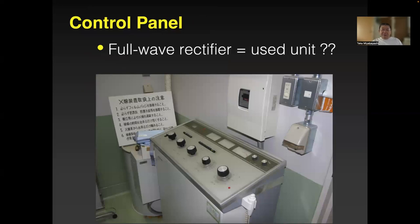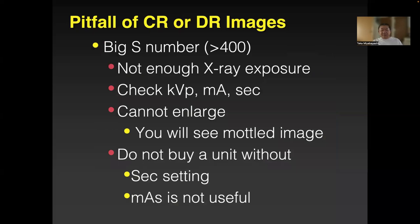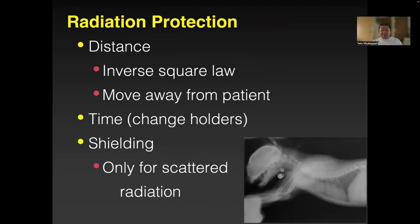A rectifier — you can still use it, it lasts 30 to 40 years. But the old units from the university may be too old. A DR system looks great. The problem is if you don't have enough X-ray exposure the image will be grainy. I'd buy a DR unit — then you don't even need a grid, which is good for radiation protection. Of course don't get your fingers in the beam.